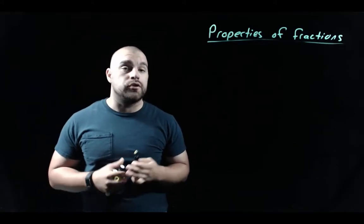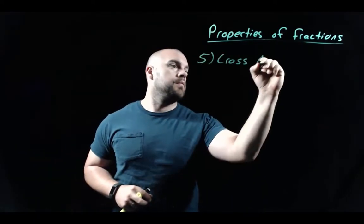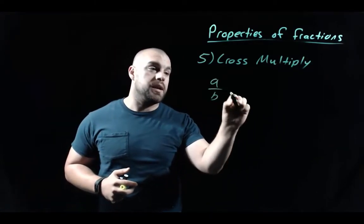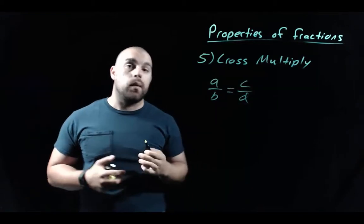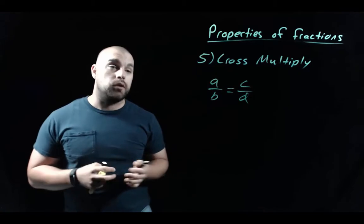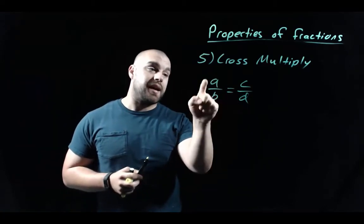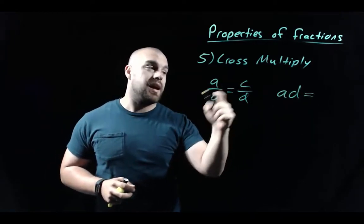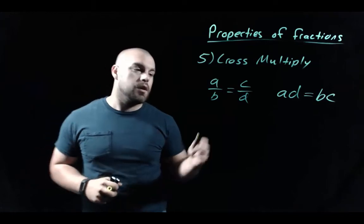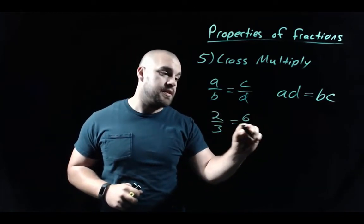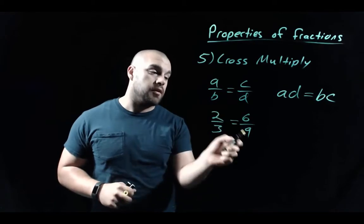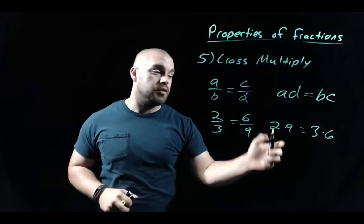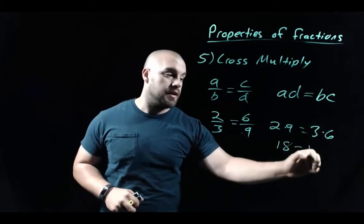Our last property of fractions is cross-multiplying. If we have equivalent fractions — a over b equals c over d — we can cross-multiply diagonally: a times d equals b times c. For example, 2-thirds equals 6-ninths: we get 2 times 9 equals 3 times 6. On the left, 2 times 9 is 18, and on the right, 3 times 6 is also 18.